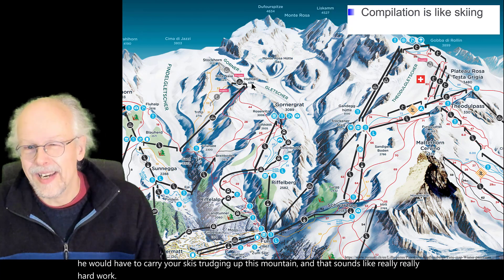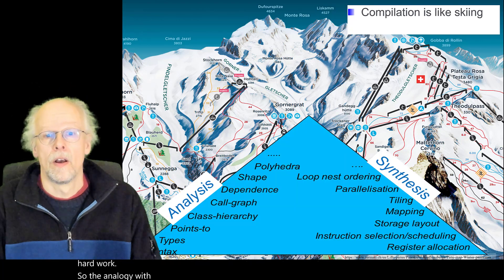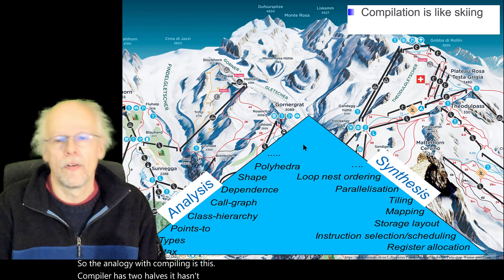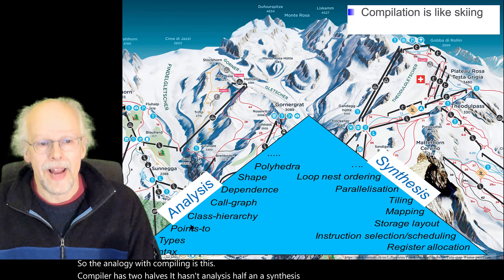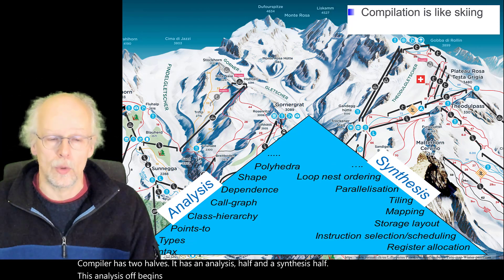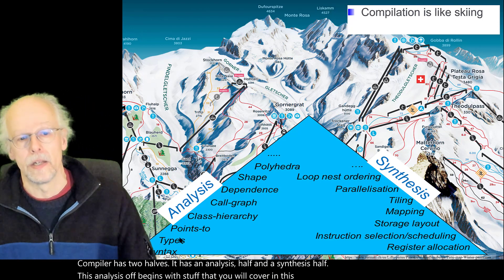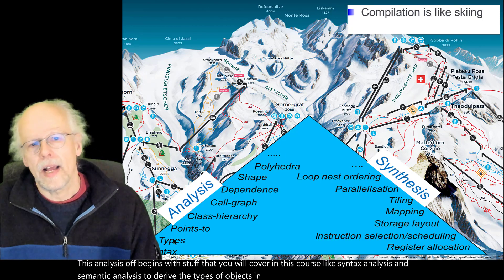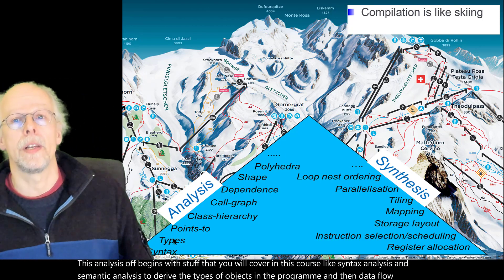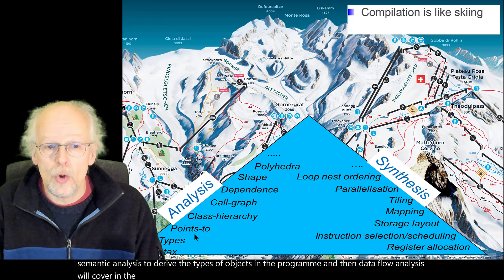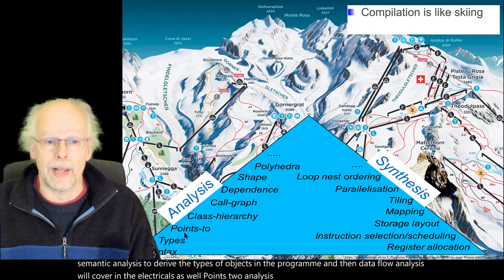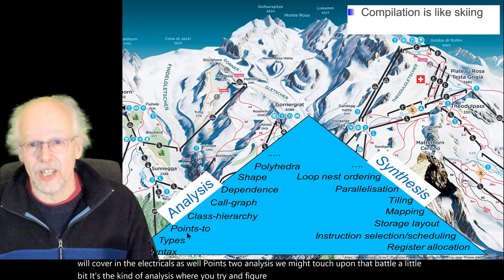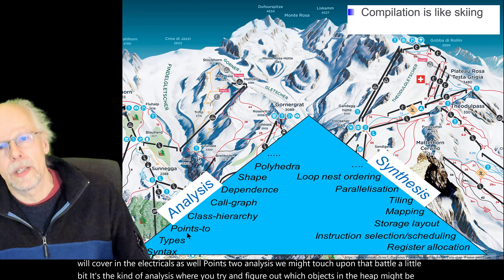So the analogy with compiling is this. A compiler has two halves: it has an analysis half and a synthesis half. The analysis half begins with stuff that you'll cover in this course like syntax analysis and semantic analysis, to derive the types of objects in the program, and then data flow analysis — we'll cover that in the lecture course as well — and points-to analysis. It's the kind of analysis where you try and figure out which objects in the heap might be pointed at by the pointers in a program.